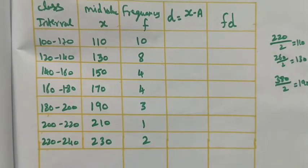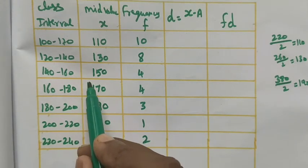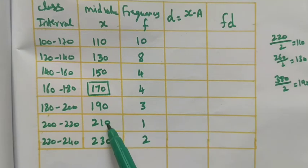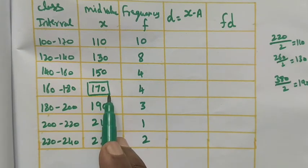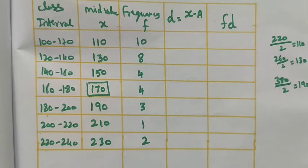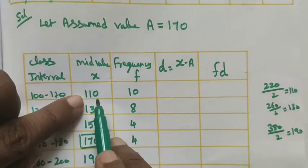The assumed value must always be chosen from the mid-values x. We have seven data points, so we choose the middle value. We choose the middle value because the deviations above and below will be the least, making multiplication easier. So the assumed value a = 170.